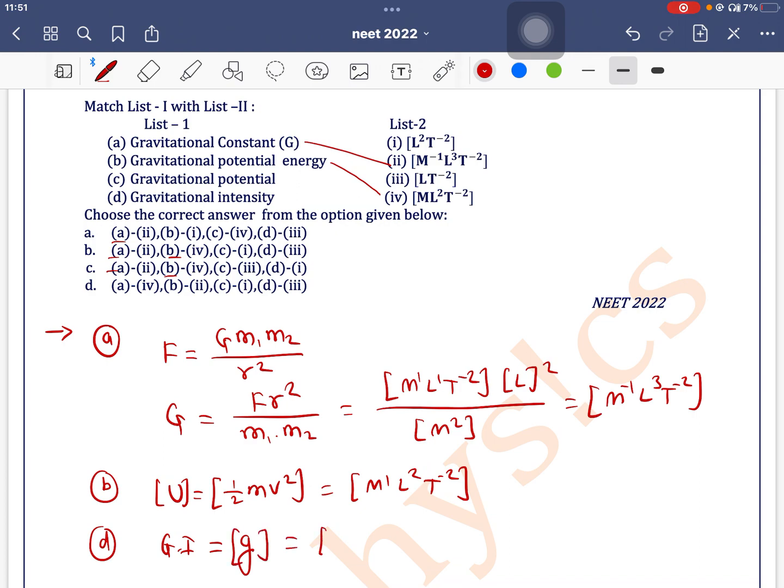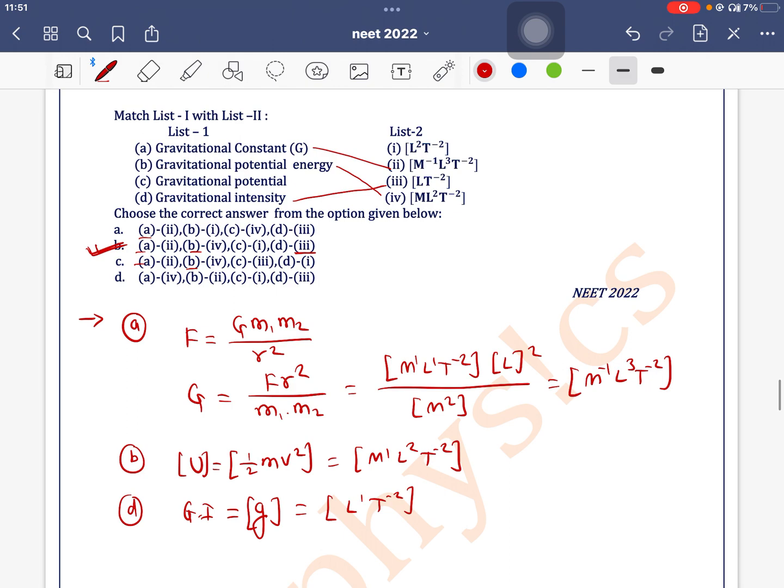due to gravity dimension is L^1 T^-2. L^1 T^-2, so d3. d3 means this one, so option b, option b is the correct one.